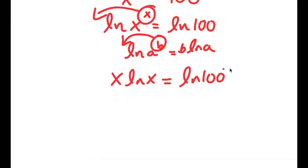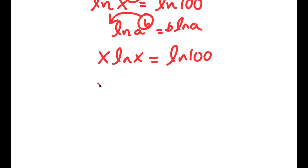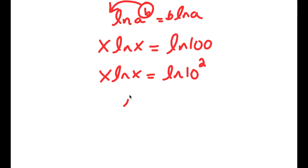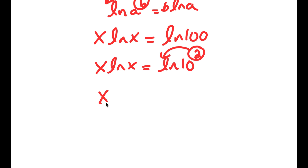Now ln 100 is the same thing as ln of 10 squared, so I get x times ln x is equal to ln of 10 squared. Applying the log power rule again, I can move the 2 to the front: x times ln x is equal to 2 times ln 10.